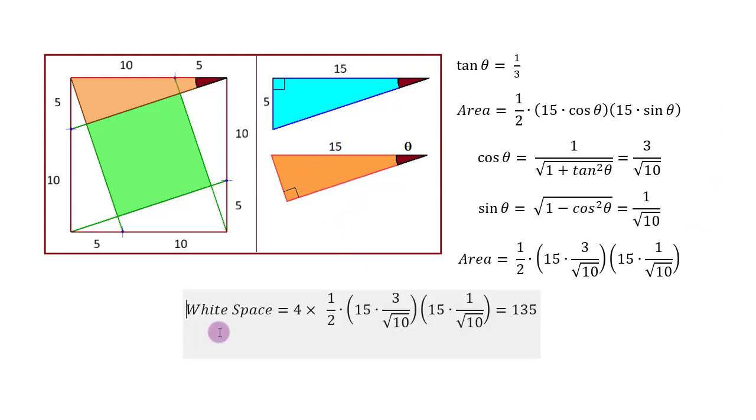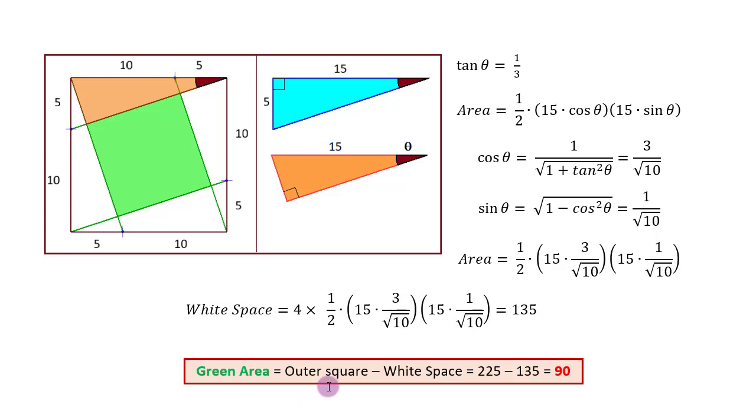We can substitute that and for the white space we are going to have four such triangles, so multiply by 4. This is the area of the entire white space, 135 square units. Then we subtract it from the outer square area, 225, to get the green area as 90 units.